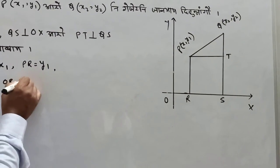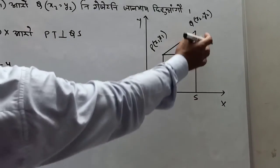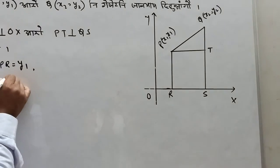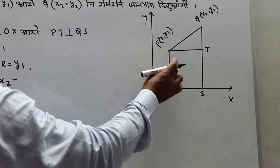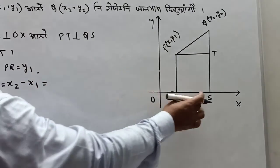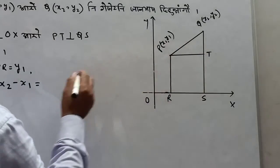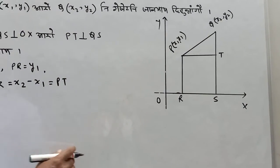RS equals OS which is x2 minus OR which is x1. So RS equals x2 minus x1. RS equals PT. This is right.